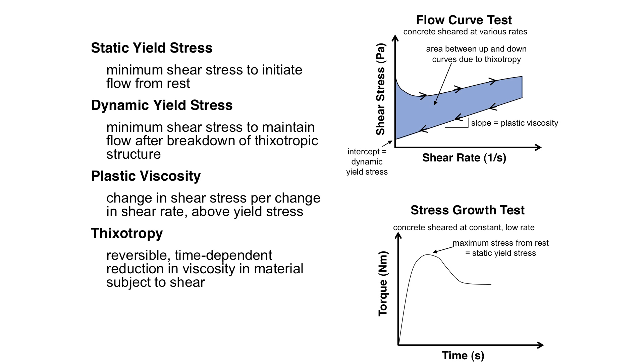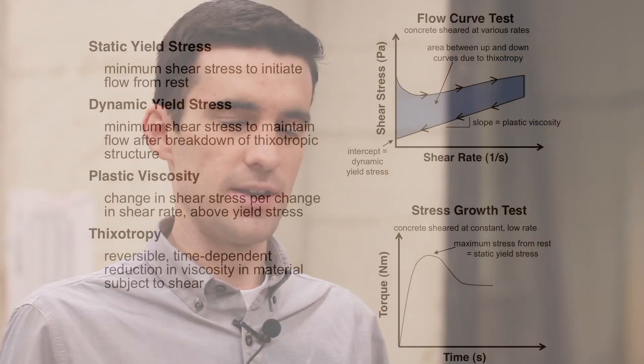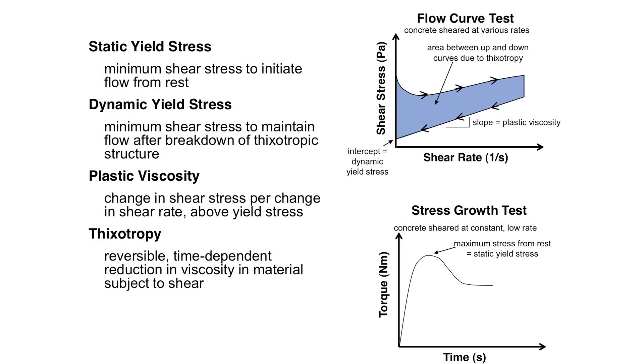We can also make a distinction between static yield stress and dynamic yield stress. Static yield stress describes the minimum stress to initiate flow from rest. When the concrete has been sitting, it's at rest. It's very common for thixotropic behavior to build up and cause a very high yield stress. Once we shear the concrete though, that thixotropic effect is broken down and the yield stress is much lower. The rheometer enables us to measure both of those.